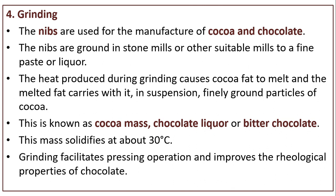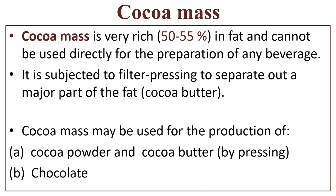Next is grinding. The nibs are used for the manufacture of cocoa and chocolate. The nibs are ground in stone mills or other suitable means to a fine paste or liquor. The heat produced during grinding causes cocoa fat to melt, and the melted fat carries with it finely ground particles of cocoa in suspension. This is known as cocoa mass, chocolate liquor, or bitter chocolate. This mass solidifies at 30°C. Grinding facilitates the pressing operation and improves the rheological properties of chocolate.